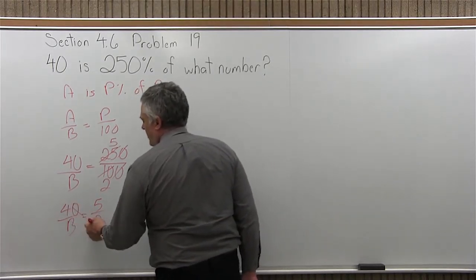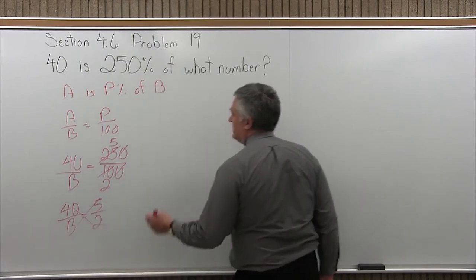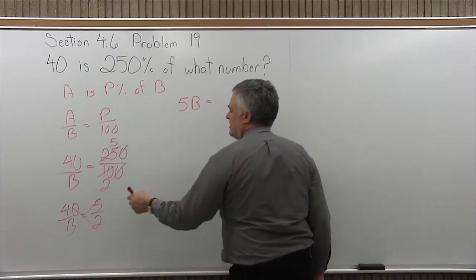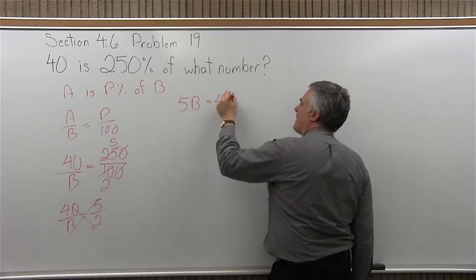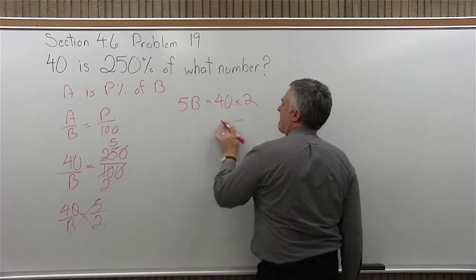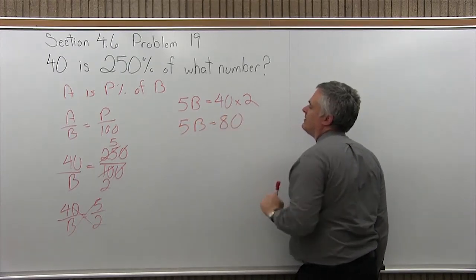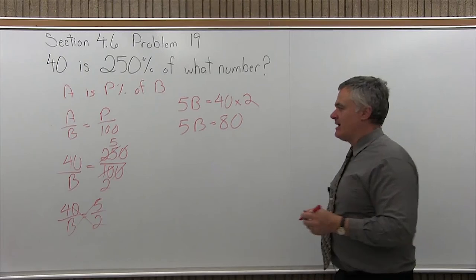So, now I will cross multiply and divide. B times 5 will be 5B equals 40 times 2. So 5B equals 40 times 2 is 80. Divide the 5.